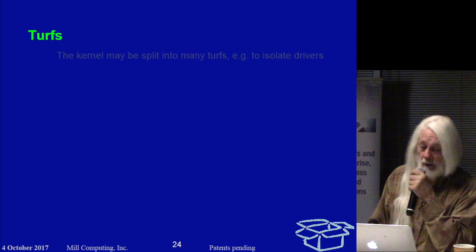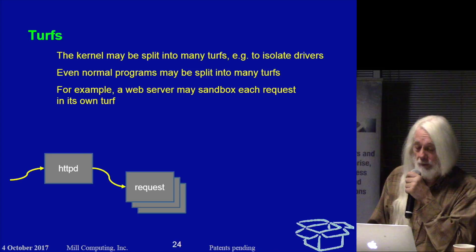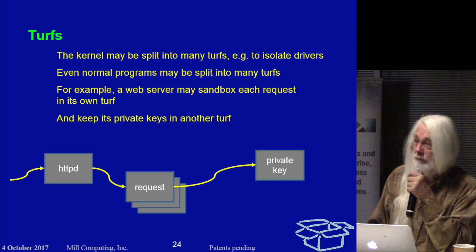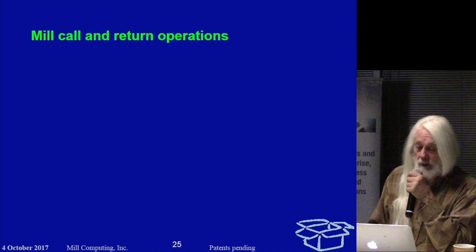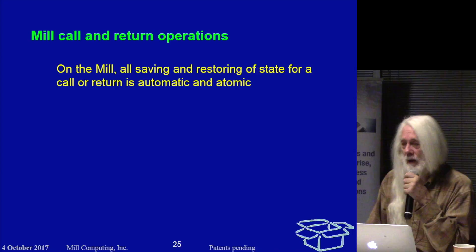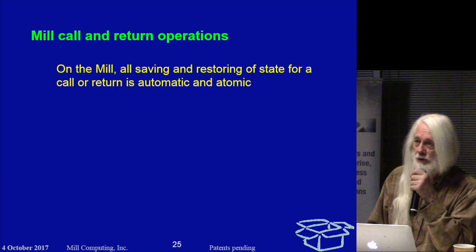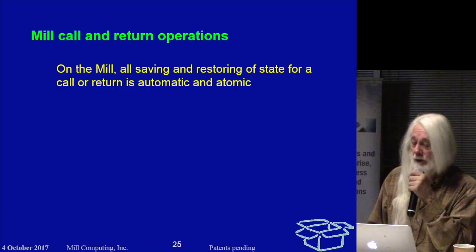If we split the TURF into many TURFs to isolate the drivers, we could, for example, sandbox the web server, and it could keep its private keys in a separate TURF and use a key manager service to access them. Call and return operations are required in order to make all of this work. In particular, the Mill is a very CISC complex infrastructure architecture. The call and return operations do everything involved in the call — saving state, restoring state, checking that permissions are possible — and the call and return operations are atomic.